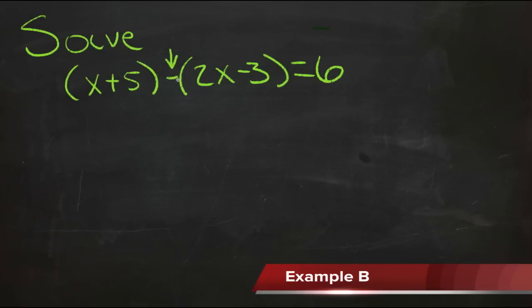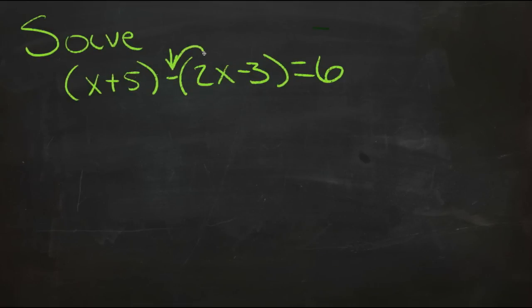This negative symbol tells us that everything inside this set of parentheses is being multiplied by negative 1. So the first thing we need to do is handle that multiplication so that we can drop the parentheses and combine the like terms. If we take negative 1 times 2x, we'll get negative 2x. And if we take negative 1 times negative 3, we'll get positive 3.